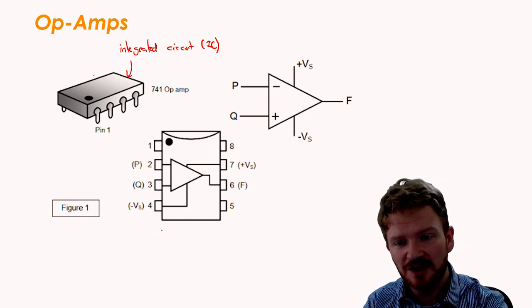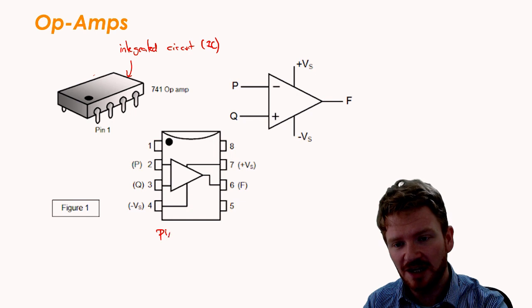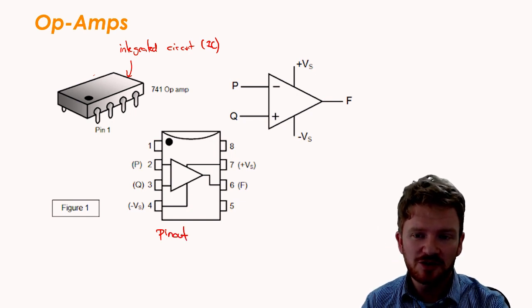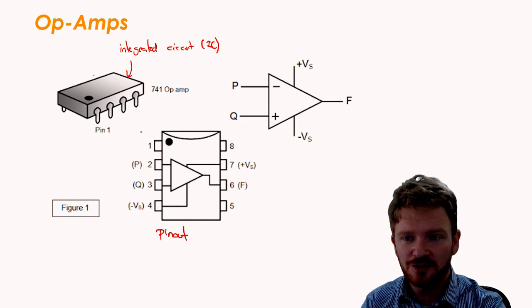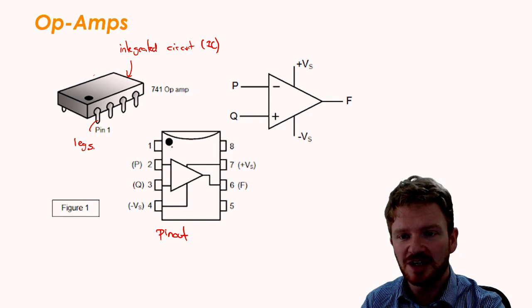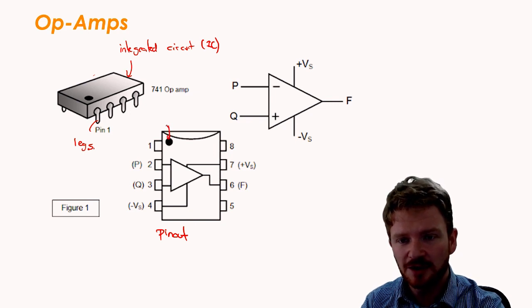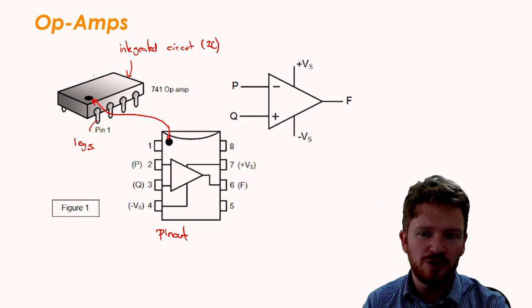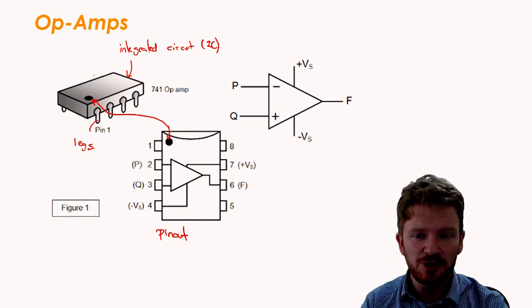Often this package will come with a description called a pin-out. The pin-out tells us what each of these connectors here, which are called legs, it tells us what they're connected to. You can see I've got a dot here. That dot matches up with an actual black dot on the object, so you can always work out which one's which.